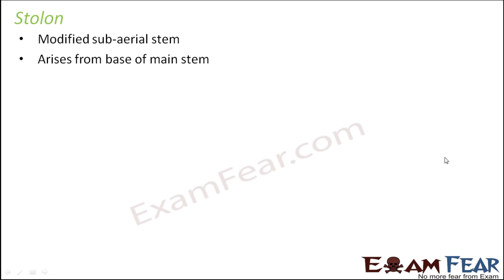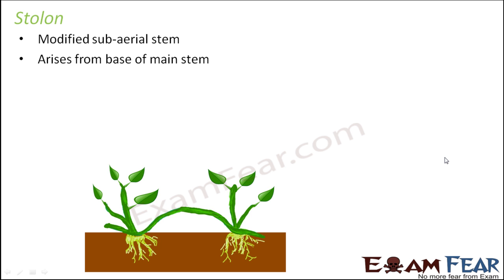The third type is a stolon. It is again a modified sub-aerial stem and it arises from the base of the main stem. It doesn't creep along the ground but goes slightly above the ground and then gradually comes back towards the ground, then goes above again and comes back down. So it grows aerially for some time, then goes downward. Where the terminal bud touches the ground, it will give rise to new roots and new shoots, and then starts growing aerially again.